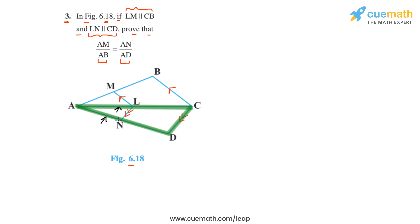And since both AM by AB and AN by AD are equal to AL by AC, right, as you see in this figure, we will get AM by AB equal to AN by AD.